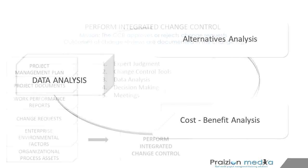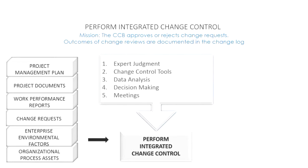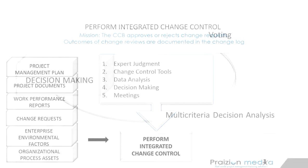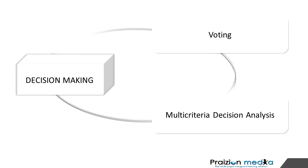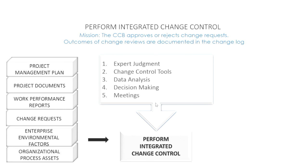Next we have decision making — making decisions in the change control board. There are all sorts of ways this could be done. The two broad categories are: voting on whether to approve a change request, or multi-criteria decision analysis, which looks at various criteria for agreeing that a change should be made. All these criteria should be defined up front, and the change control board is of course aware of them. The final tool and technique is meetings — change control meetings are the vehicle by which change requests get approved.